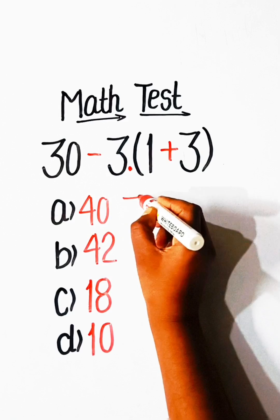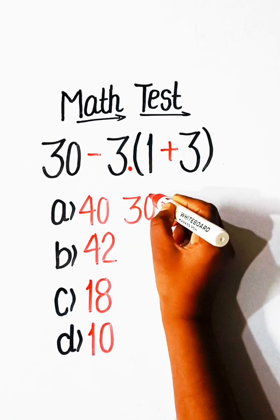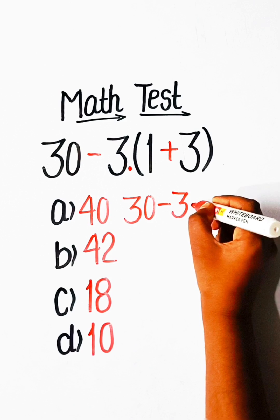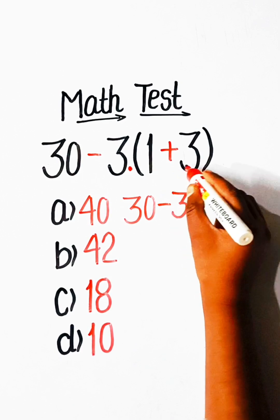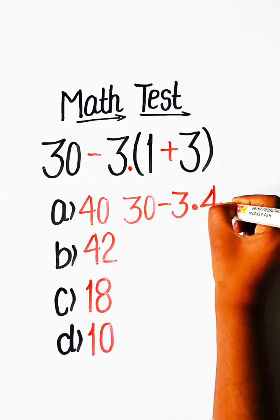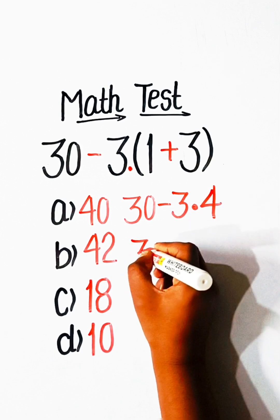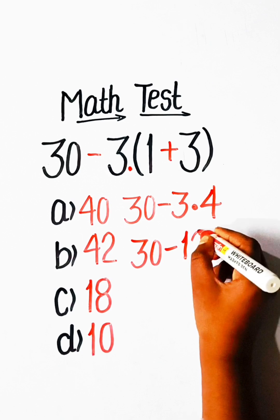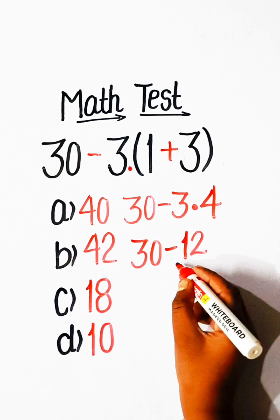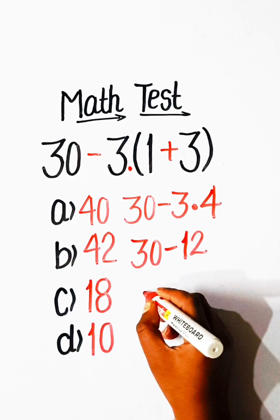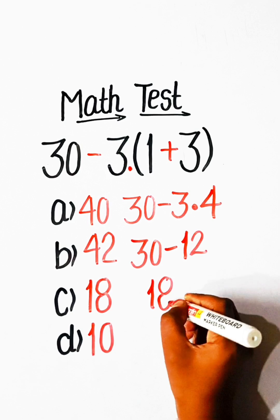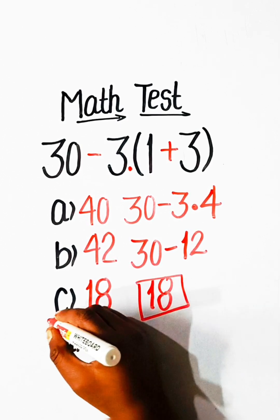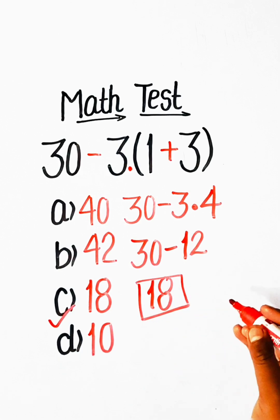So let's solve this. 30 minus 3 multiply by 1 plus 3 is 4. So we will write here 30 minus 3 fours are 12, and 30 minus 12 is 18. So option C, 18 will be our correct answer.